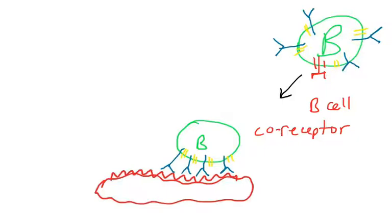The B-cell co-receptor is made of three proteins, proteins called CR2, CD19, and CD81.